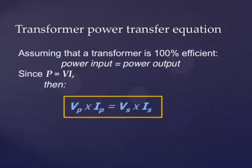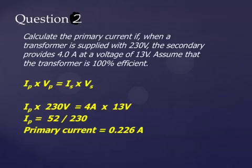Now we come to the second transformer equation called the power transfer equation, and we are assuming it is 100% efficient. So the power input into the transformer is equal to the power output. That is the input power, that is the output power. V for voltage, I for current, P for primary or input, S for secondary or output. This question 2 shows you how this power transfer equation can be applied.